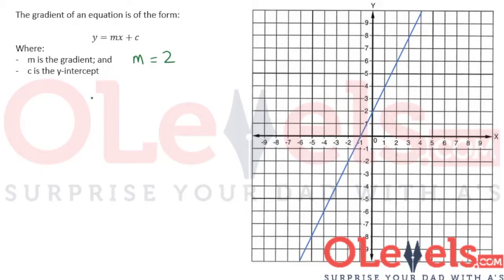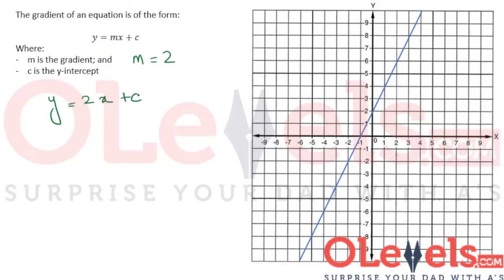When we put 2 instead of m in this equation, what we get is y is equal to 2x plus c. Now, we are almost done with the equation of this line, but we do not know c. How can we determine c?